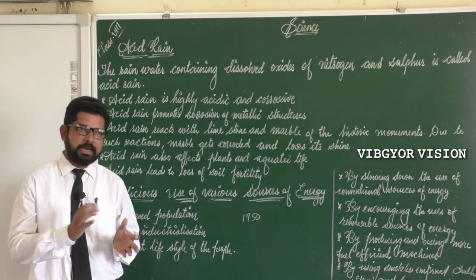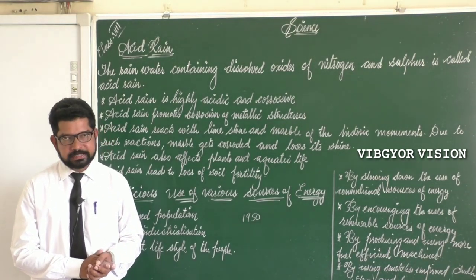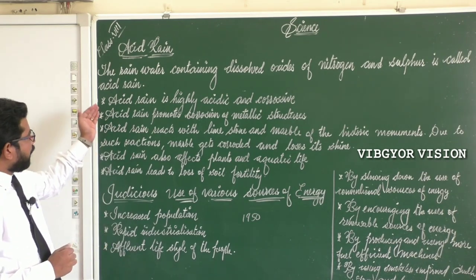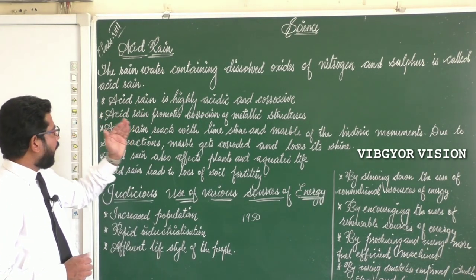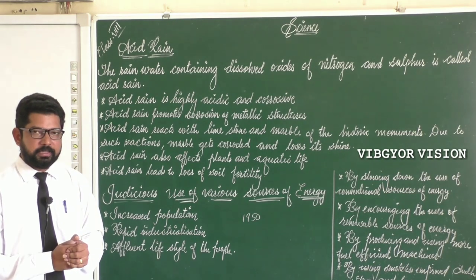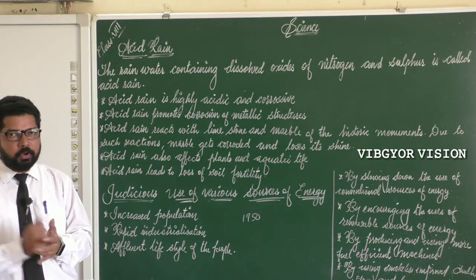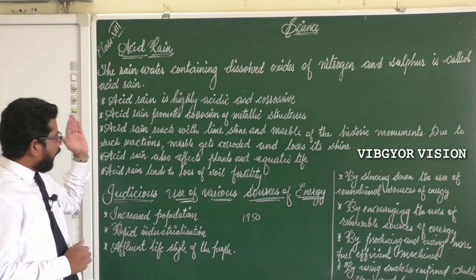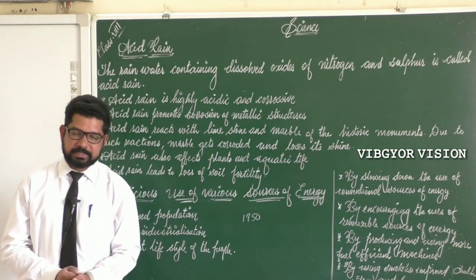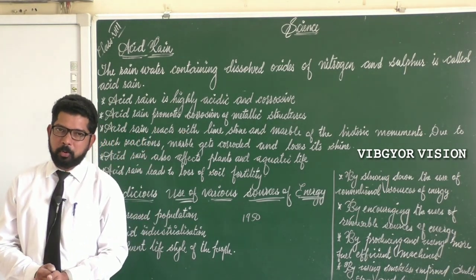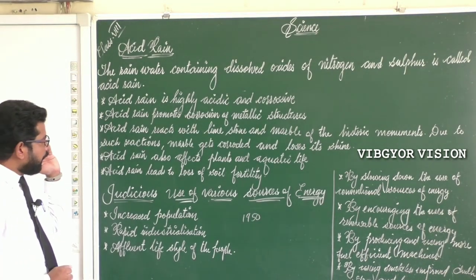Now let's learn the effects of acid rain. Acid rain is highly acidic and corrosive. Acid rain also promotes the corrosion of metallic structures.